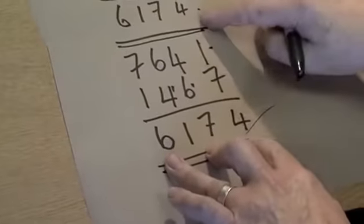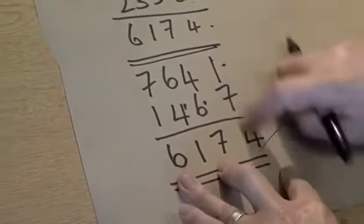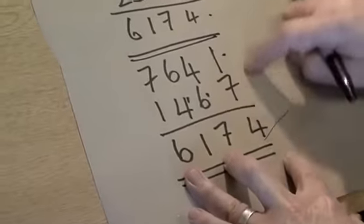The whole thing with this procedure always converges, always ends up with this number. And when it's got to this number, it's stuck in a perpetual loop that will always bring you this number.